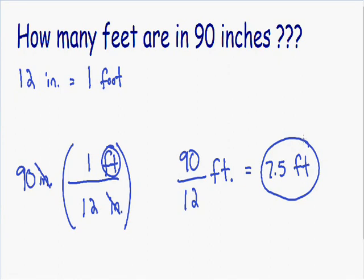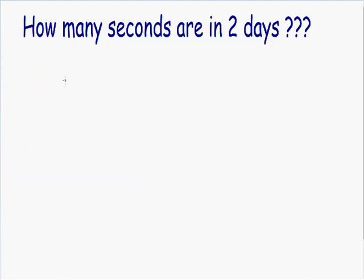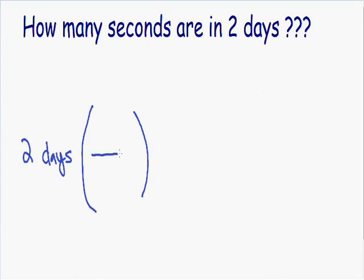So let's go over a little harder example. Here in this example we are converting units of time. It says how many seconds are in two days? So we're starting with two days and converting that into seconds. This is the exact same process as in our first example. I'm going to make my conversion tool, which is just a big parentheses with a fraction. In the denominator of our conversion tool, we need to put our units that we're starting with. Since we're starting with days, that means we need to put days in our denominator.